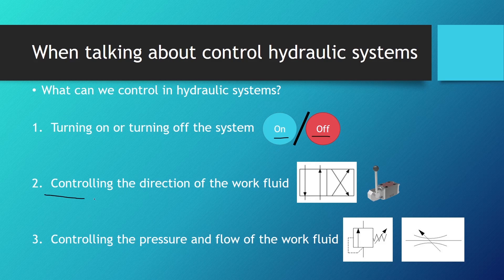Second, we can control the direction of the work fluid with directional control valves. If we want cylinder extrusion, we have to direct the fluid to the front of the piston; if we want cylinder retraction, we have to direct the fluid to the back of the piston, as we saw in one of the previous lessons. This is exactly what directional control valves do — they enable us to direct the fluid flow.